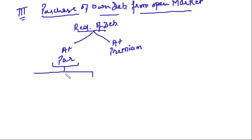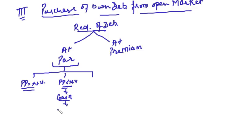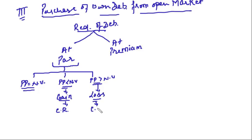In that case there were three sub-cases. If purchase price equals nominal value — no profit, no loss. If purchase price is less than the nominal value, then you have a gain, which is a capital gain and will be transferred to capital reserve. If purchase price is more than nominal value, normally the company will not buy from the open market — that would be a loss, which again will be transferred to capital reserve.